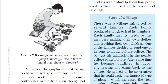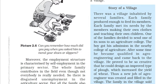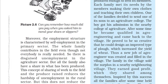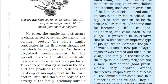Their earnings are at the bare subsistence level and they cannot raise their income. They don't have any options, so they need to work. Moreover, employment is characterised by self-employment in the primary sector. The whole family contributes in the field even though not everyone is really needed. So there is disguised unemployment in the agriculture sector — the whole family works there because they have no other option.